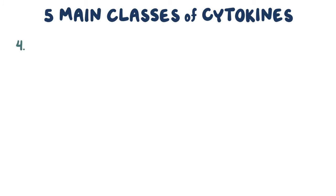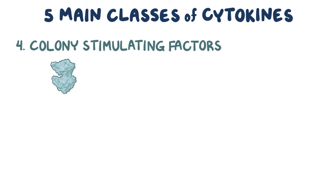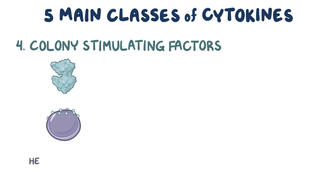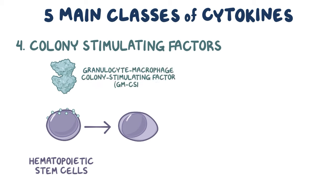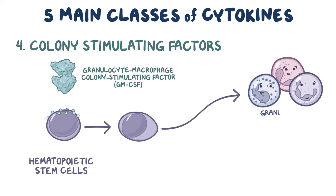The fourth group includes the colony-stimulating factors. These cytokines bind to surface receptors on hematopoietic stem cells, causing them to proliferate and differentiate. Some examples include granulocyte macrophage colony-stimulating factor, or GM-CSF, which is a cytokine secreted by a wide variety of immune and non-immune cells that stimulates the development of granulocytes and macrophages.